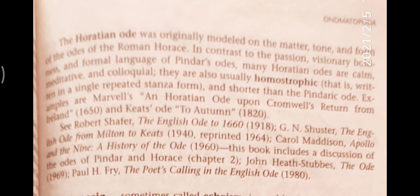The Horatian Ode is another type of Ode, modeled on the matter, tone, and form of the Roman poet Horace. In contrast to the passion, visionary boldness, and formal language of Pindar's Odes, many Horatian Odes are calm, meditative, and colloquial. They are also usually homostrophic — that is, written in a single repeated stanza form — and shorter than Pindar's Odes. Examples include Marvell's 'Horatian Ode upon Cromwell's Return from Ireland' and Keats's 'Ode to Autumn,' which is considered the finest Ode.